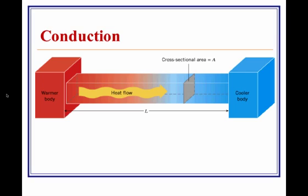Conductive materials are generally metals or, overall, things that are generally denser, so that they transfer energy directly from one atom to the next or one molecule to the next at a higher rate.